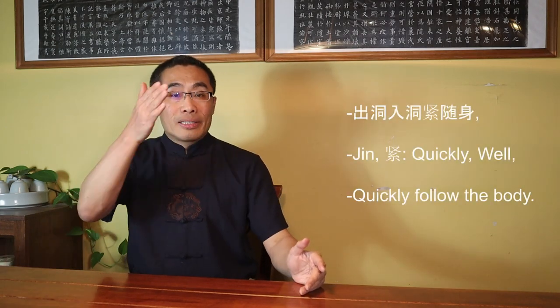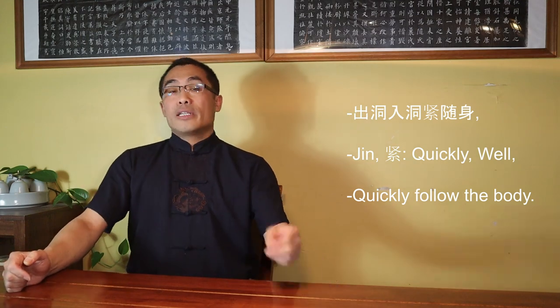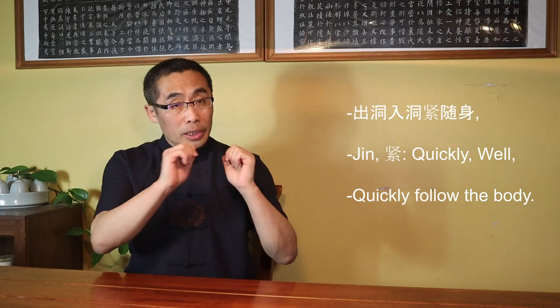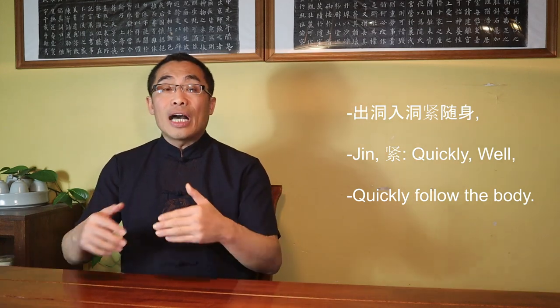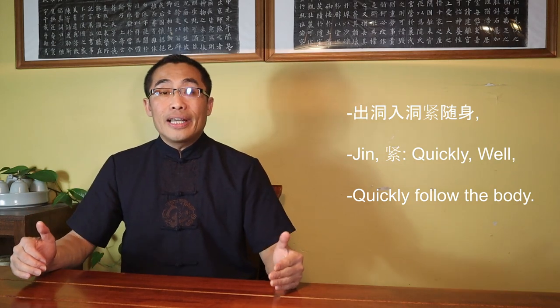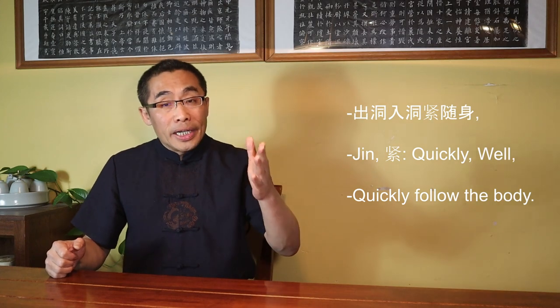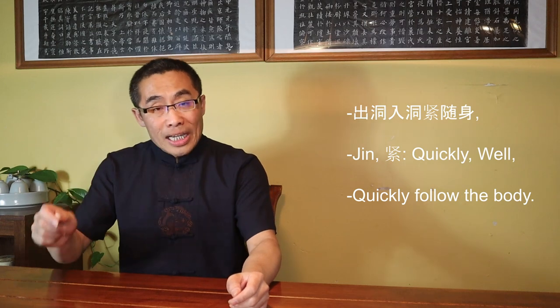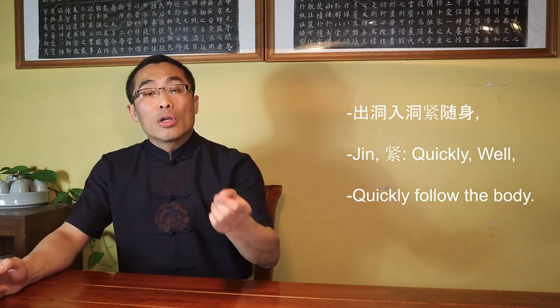However, if we look at the sentence Chu Dong Ru Dong Jin Sui Shen, the character Jin is in front of the verb Sui. So, Jin, in this case, is not an adjective, it is actually an adverb, specifically meaning quickly or well. The accurate translation of the term Jin Sui Shen is quickly follow the body.